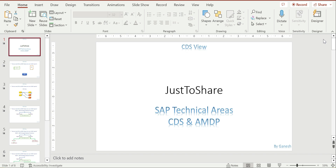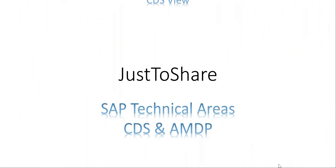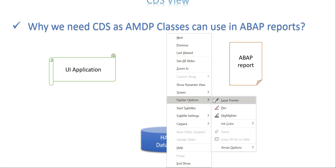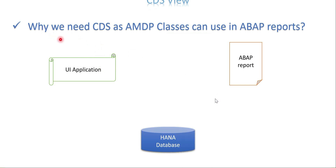We'll understand better about these two, then we can decide in which scenario we have to use CDS and when to use AMDP. The question is: why do we need CDS when AMDP classes can be used in ABAP reports? Is a class and method sufficient, or do we need to create a CDS view?